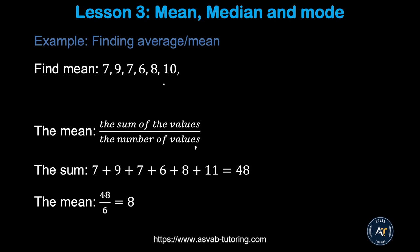The first thing we learn here is how to find Average or Mean. Average and Mean are the same thing. If you want to find the Mean or Average, you have to add the numbers. You can see there are a few random numbers: 7, 9, 7, 6, 8, and 10. You add them up — that gives you 48 — then divide by 6, which gives you 8. So the correct answer is 8.